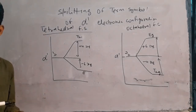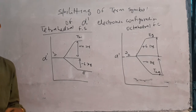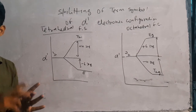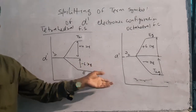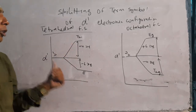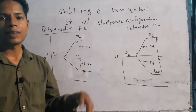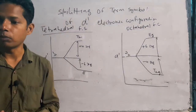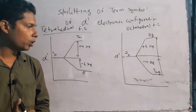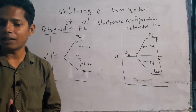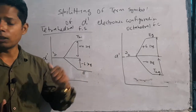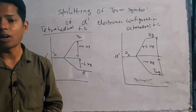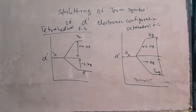इस तरह D1 electronic configuration का term symbol octahedral और tetrahedral field में split हो जाता है। इसी base पर D2, D3, D4, D5 का भी term symbol निकालकर उसको split कर सकते हैं और energy level diagram बना सकते हैं। आगे Orgel diagrams इसी तरह के होते हैं जहाँ metal ion के term symbol को energy level पर show करके उनकी split state दिखाई जाती है।